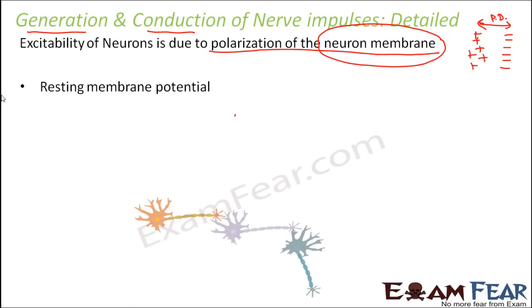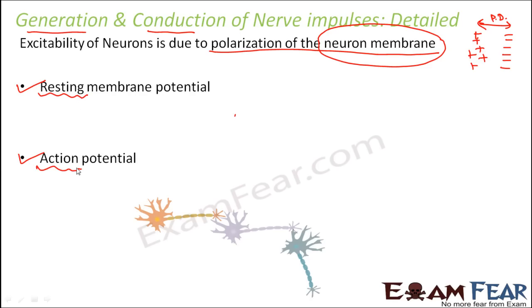When we talk about polarization of the neuron membrane, we discuss two types of potential. One is the resting membrane potential — the potential difference that exists across the neuron membrane when the neuron is in the resting phase, meaning it is not conducting any impulse. The other is action potential — the potential difference that exists across the membrane when the neuron is actively conducting impulses.